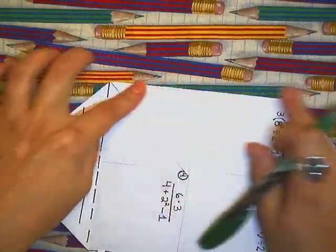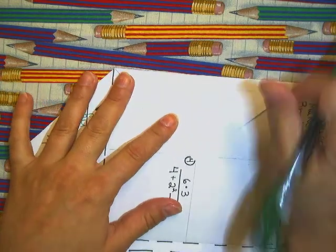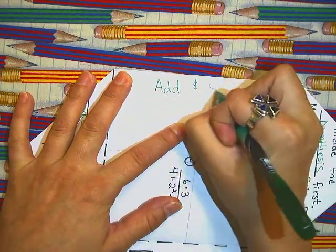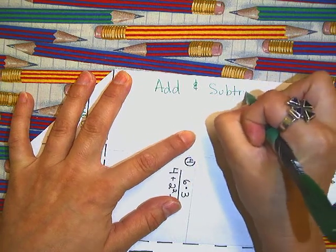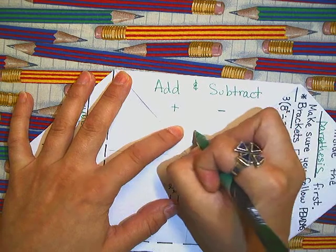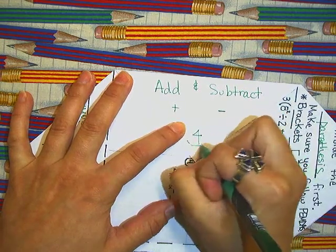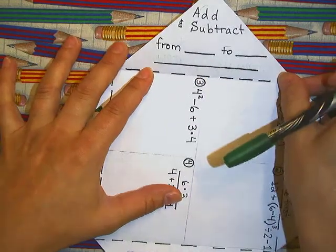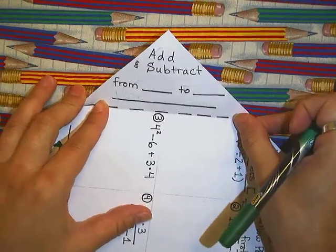The same thing is true for your last step which is addition and subtraction. Let's fold that flap down. And we are going to write add and subtract. Make our little visual beautiful. A 4 and circle. This is your fourth step.